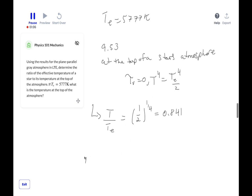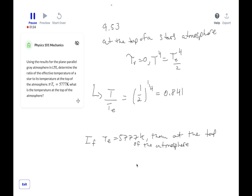And finally, if Te equals 5777K, then at the top of the atmosphere, we get that T equals 4858K. And so that was not too hard.